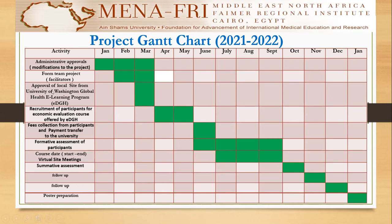In March, the local site was approved by the University of Washington. In April and May, there was recruitment of participants for the course offered by the University of Washington Global Health Learning Program. These courses are group-based and fees-based. In June, the fees were collected from participants and payment was transferred to the university.